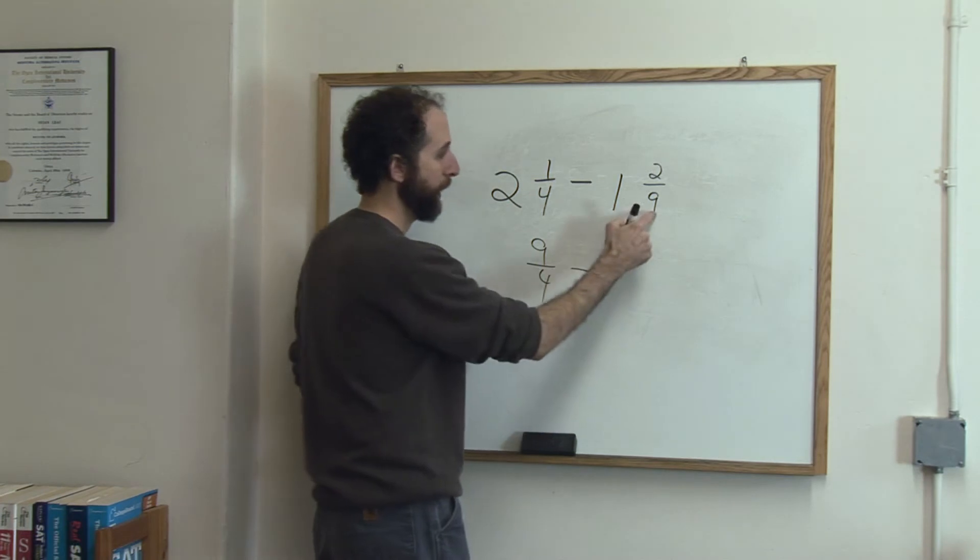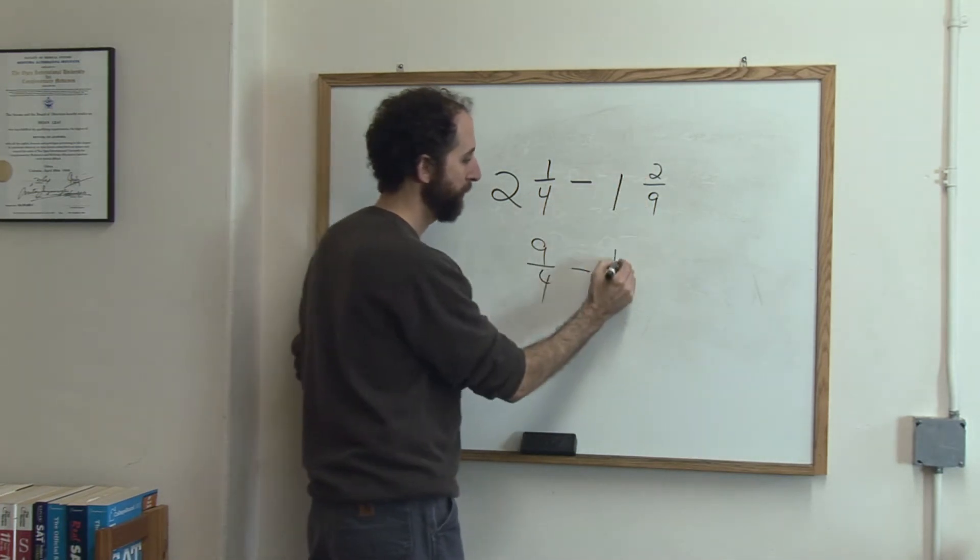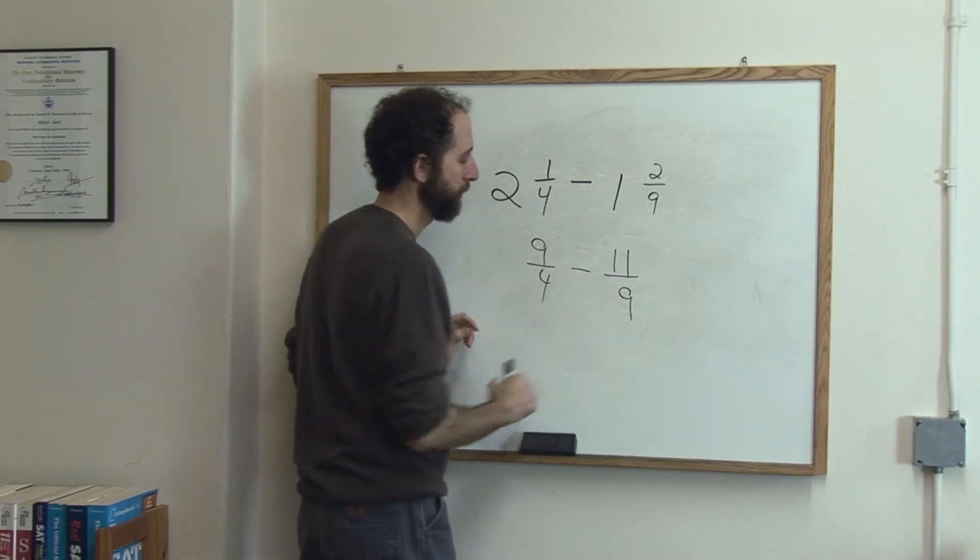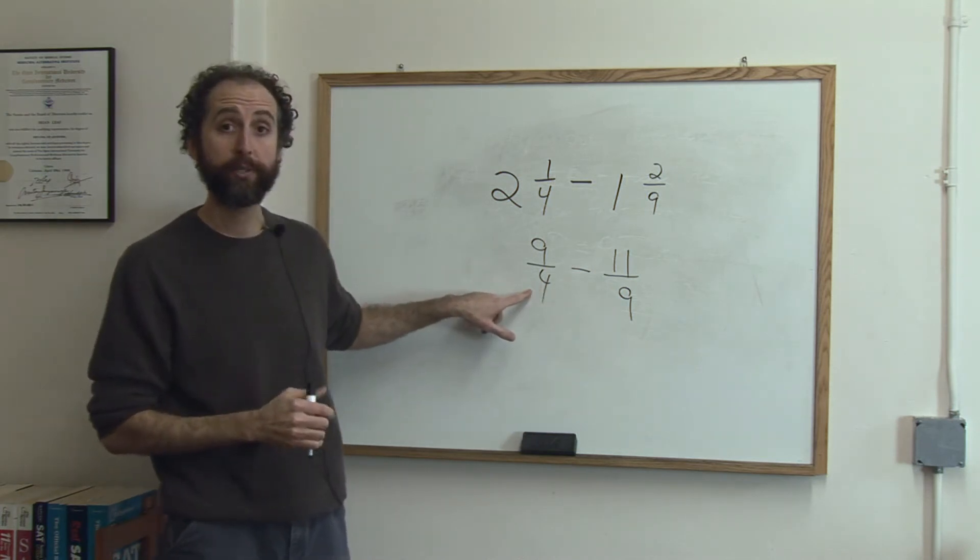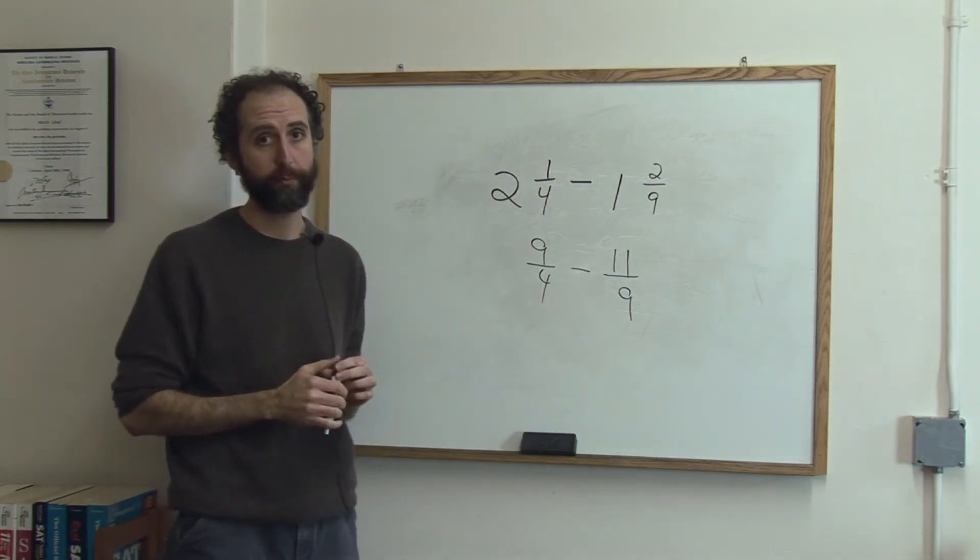Minus. 9 times 1 is 9, plus 2 is 11 ninths. Now those are not common terms. We don't have a common denominator, so we need to get a common denominator.